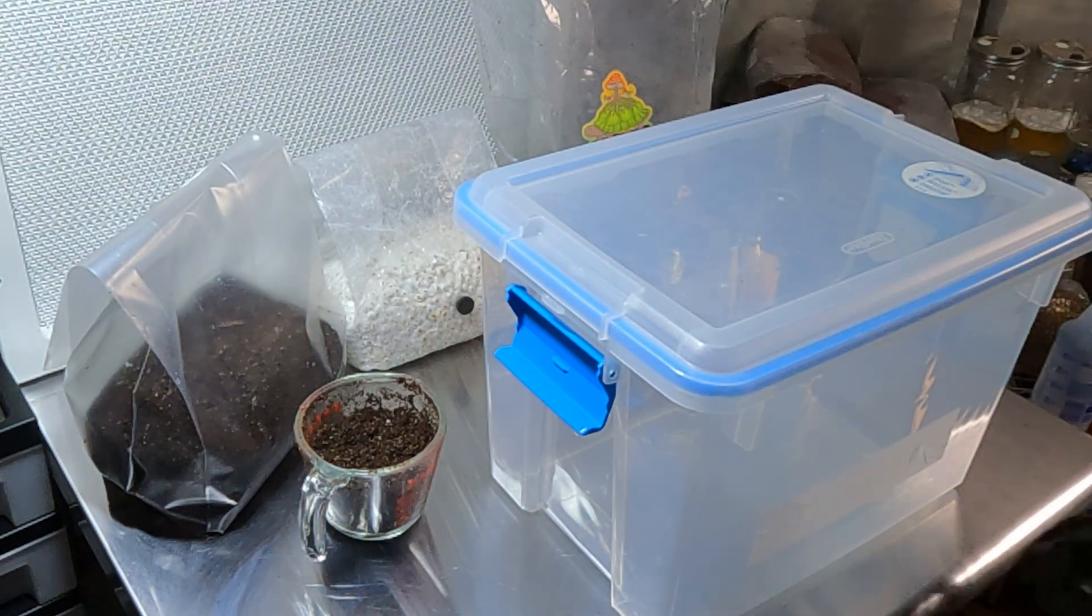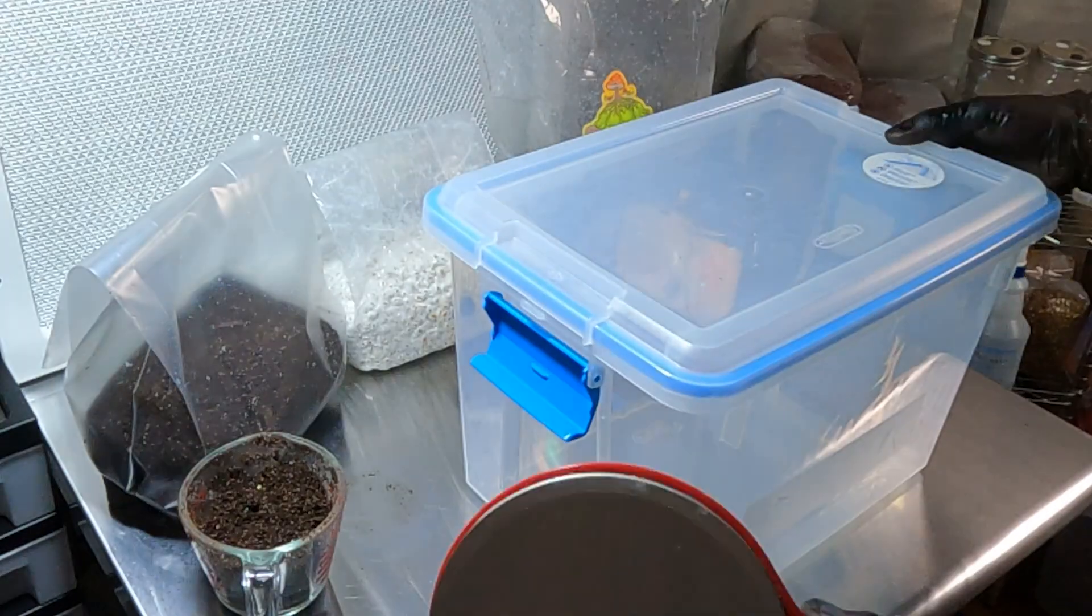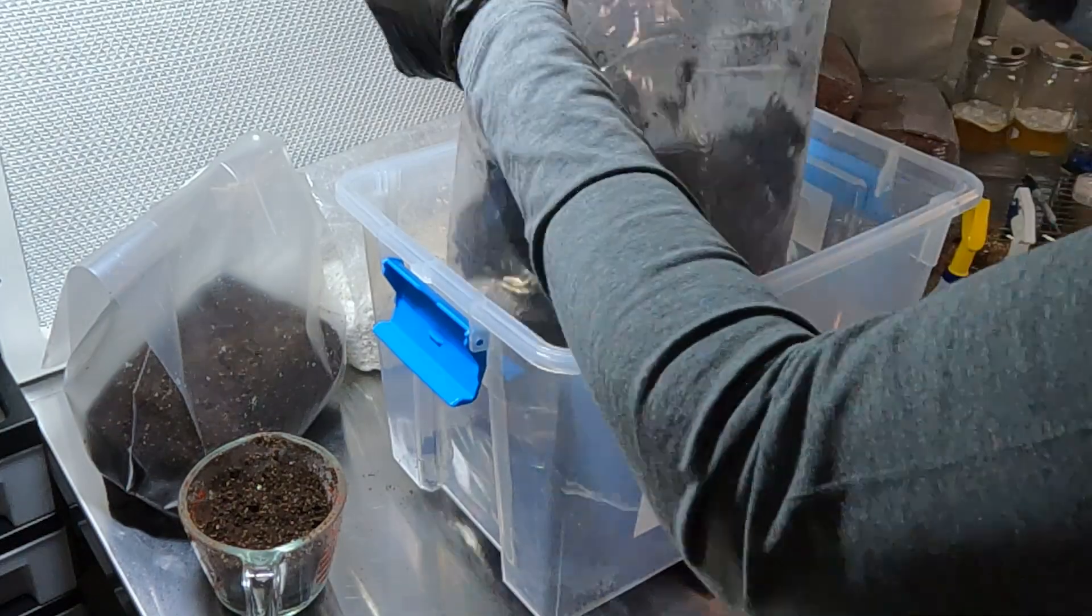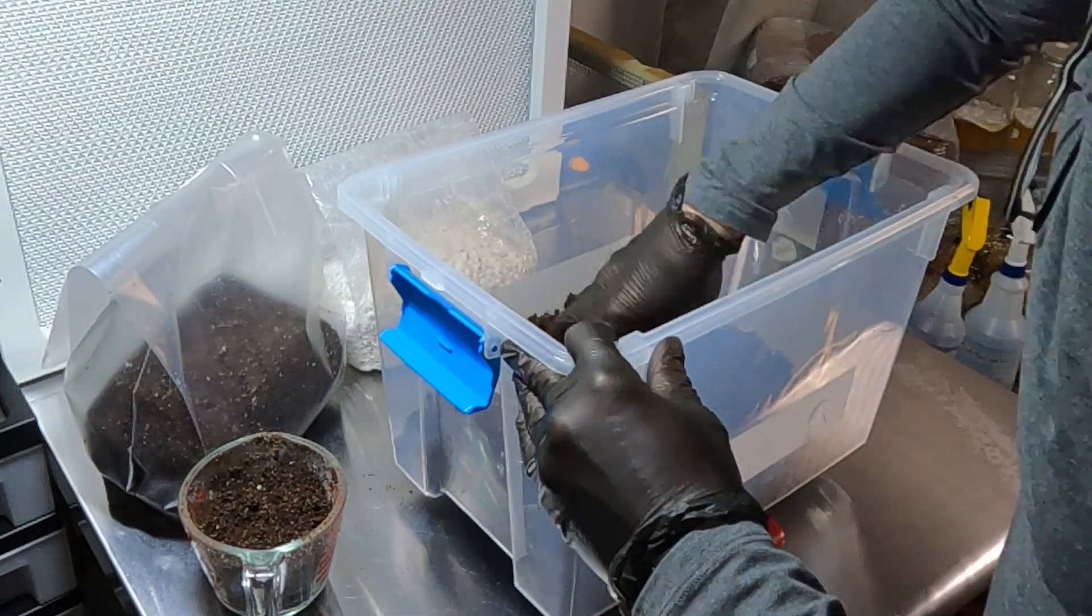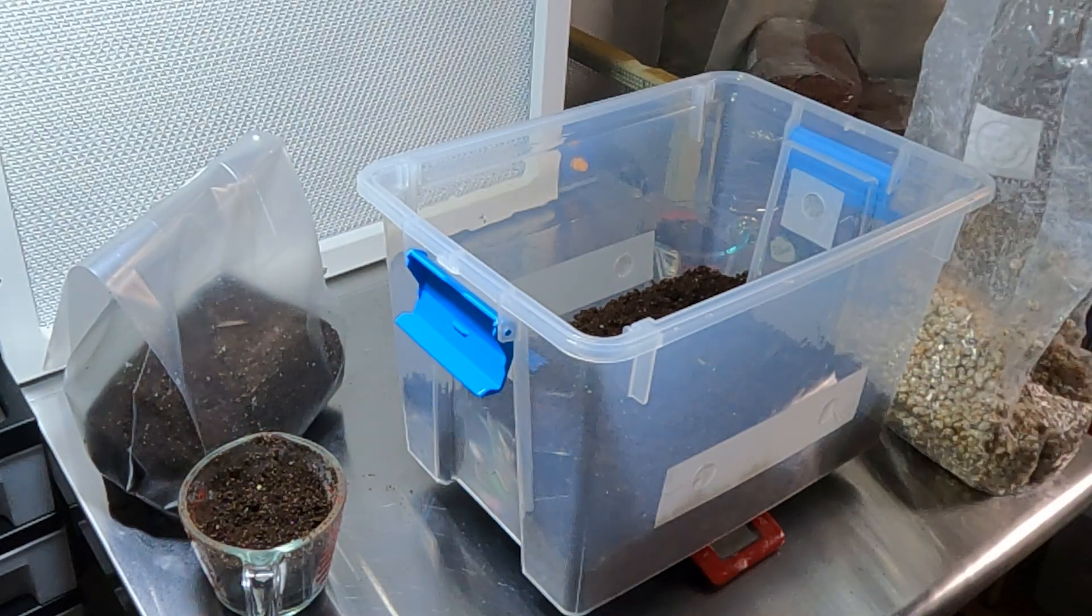Okay, so for this comparison I'm not going to be using liners in the tub so that we can observe the mycelium as it colonizes the substrate. We're going to be using a strict 2 to 1 substrate to spawn ratio. Each tub has exactly 1400 grams of substrate and 700 grams of grain spawn from the same culture.